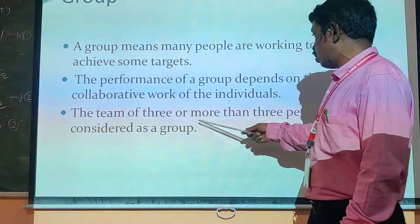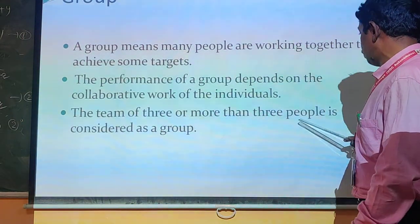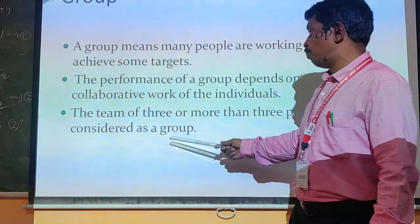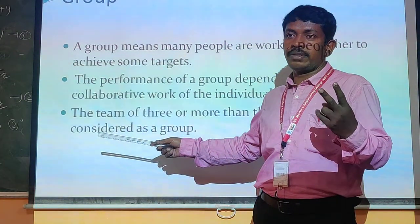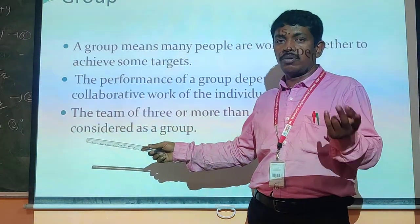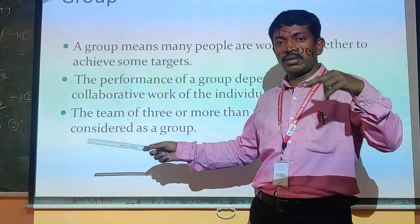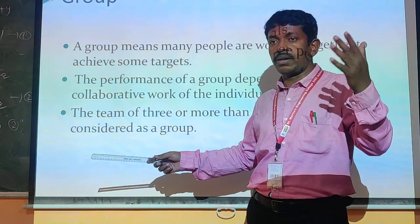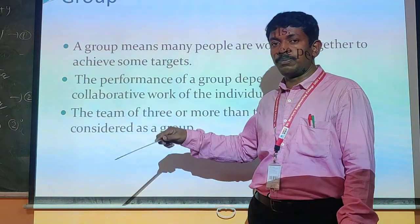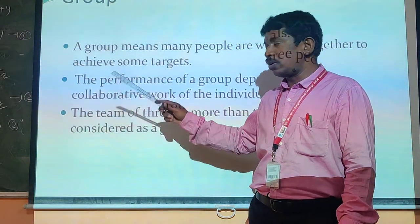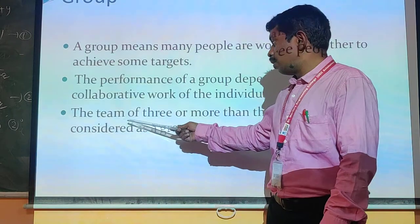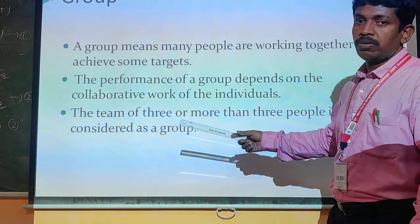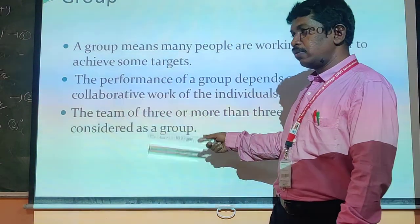The team of three or more than three people is considered a group. If it is two students or two people, it is not a group. More than three — four, five — is called a group. There are specific numbers, but more than three is called a group.